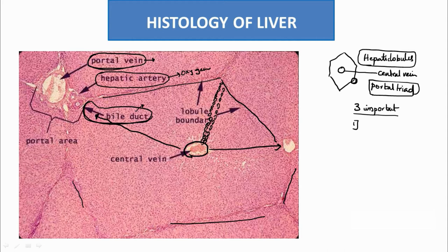The bile duct contains bile, which is the exocrine secretion of the liver. Bile contains predominantly bilirubin, which is a byproduct of degradation of RBCs. Senescent RBCs present in the spleen degrade and secrete bilirubin, which is carried in the bile duct along with nutritious material and delivered to the duodenum to be passed out.